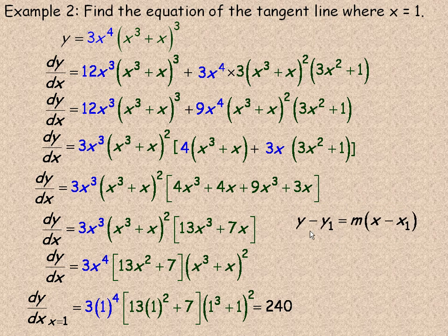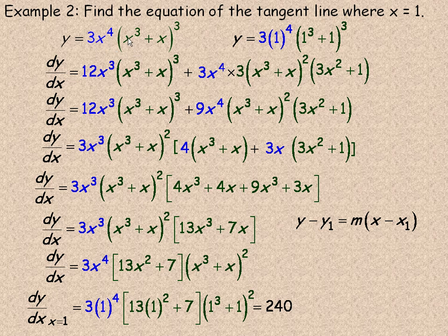Now here's my point-slope form of my tangent line. And I'm going to fill 240 in place of m. The x-coordinate is 1, but I need to find the y value. So we'll go to our original function and put 1 in place of x to find the y value. So 3 times 1 to the 4th times 1 cubed plus 1 cubed. And that works to 24. So 24 is my y1 value.